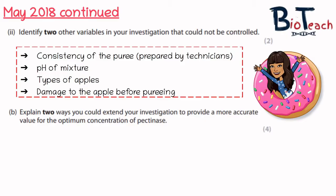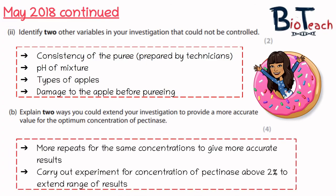Part B for May 2018 asks you to explain two ways you could extend the investigation, again for four marks, and the question is worded identically to the year before. It's asking how you could extend your investigation to provide a more accurate value for the optimum concentration of pectinase. You'd probably want to do more repeats for the same concentration to give more accurate results. You could also carry out the experiment for concentrations of pectinase above a certain percentage — in part A they used only 2%, but 3% might be more efficient. You could suggest different concentrations to extend the range of results.